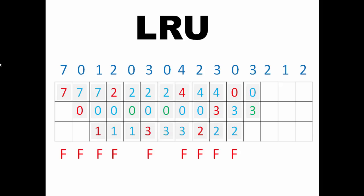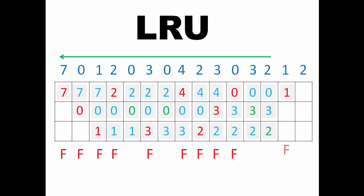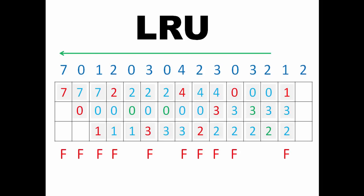The next page is 3, which is present in the page frame, so 0, 3, and 2 will remain and there will be a page hit. The next page is 2, which is present in the page frame — again 0, 3, 2 will remain and there will be a page hit. The next page is 1, which is not present. 2 is the most recently used, then 3, then 0 — so 0 will get removed and 1 will get added. There will be a page fault and 3 and 2 will remain. The next page is 2, already present — 1, 3, 2 will remain and there will be a page hit.